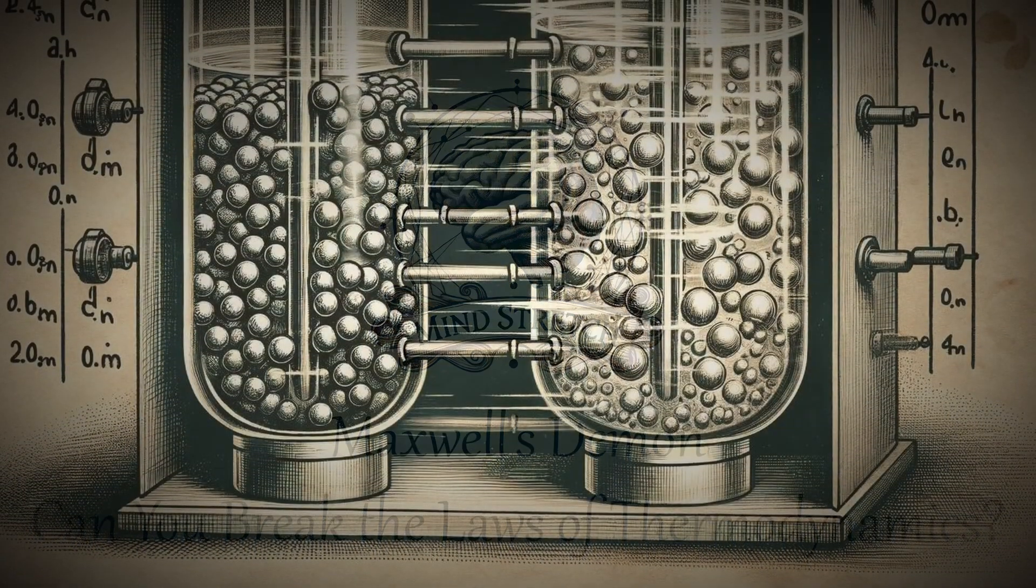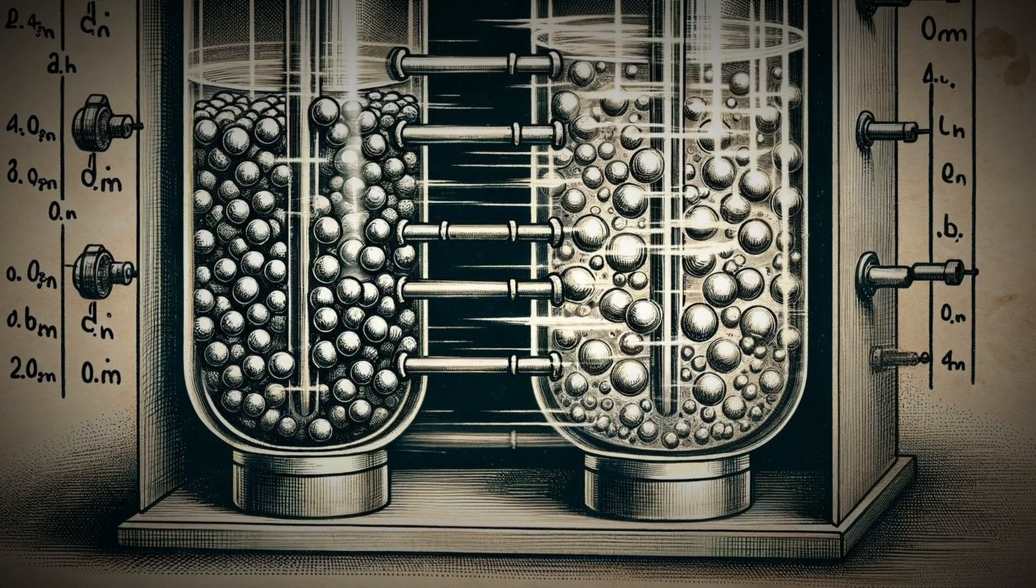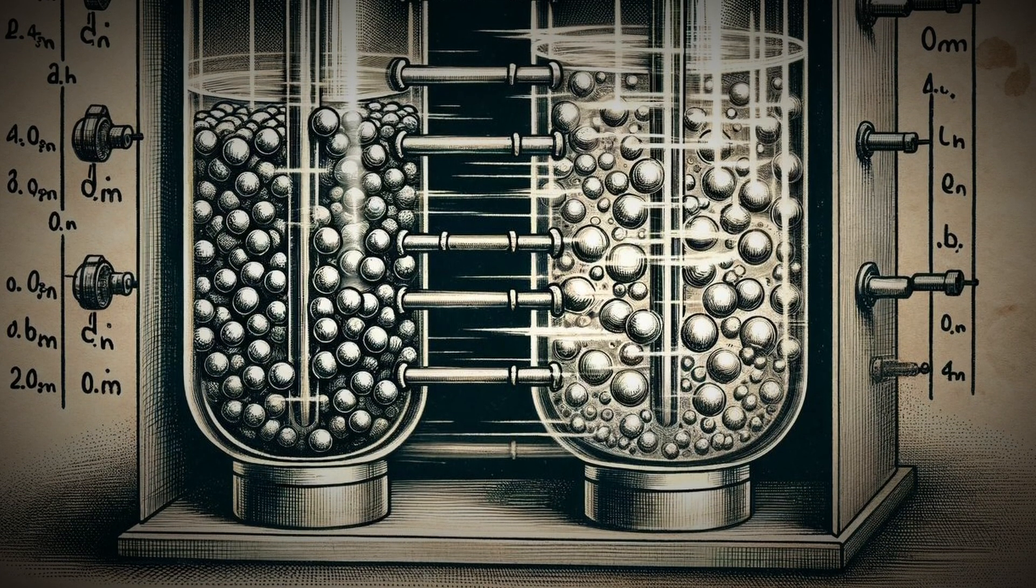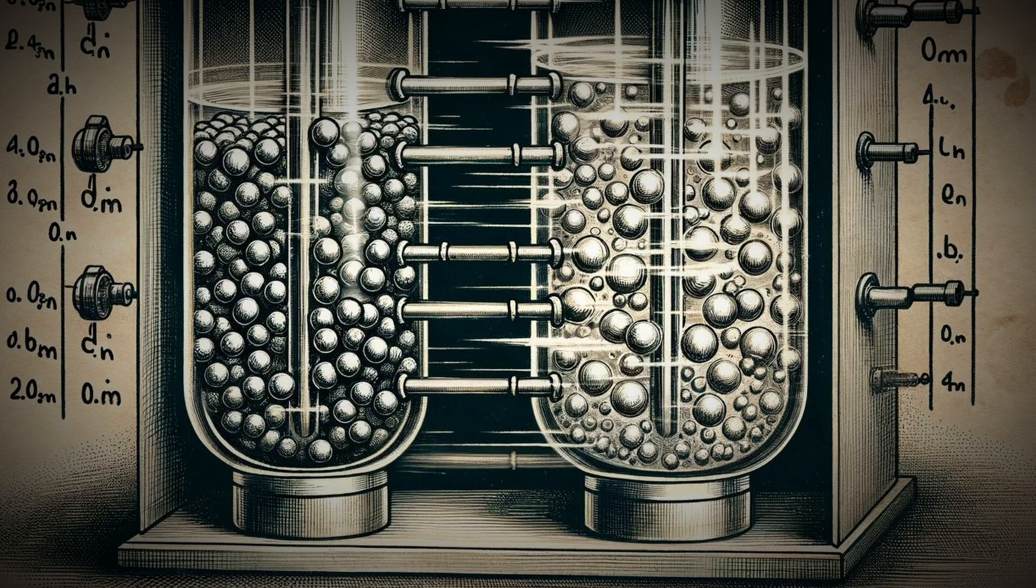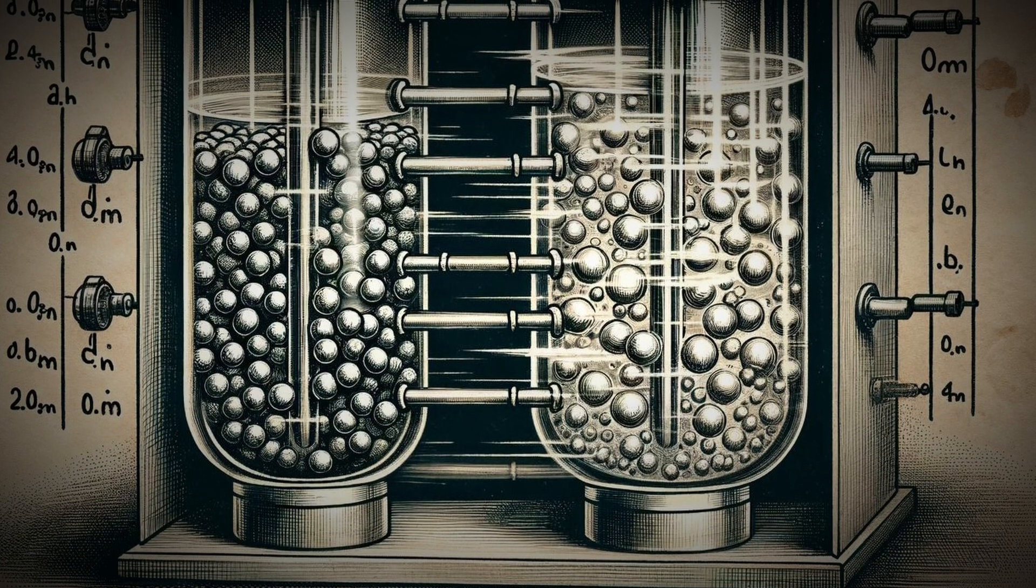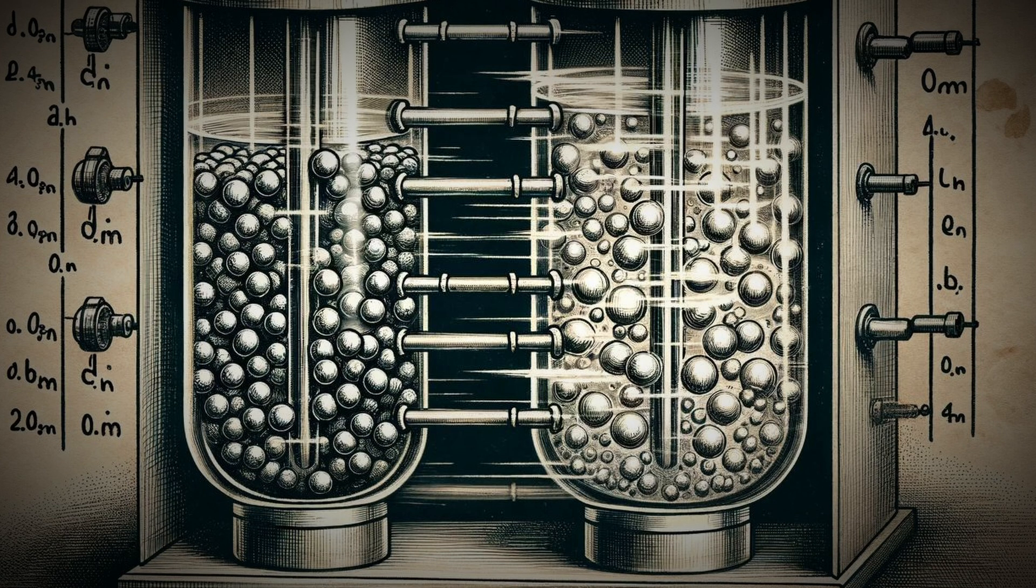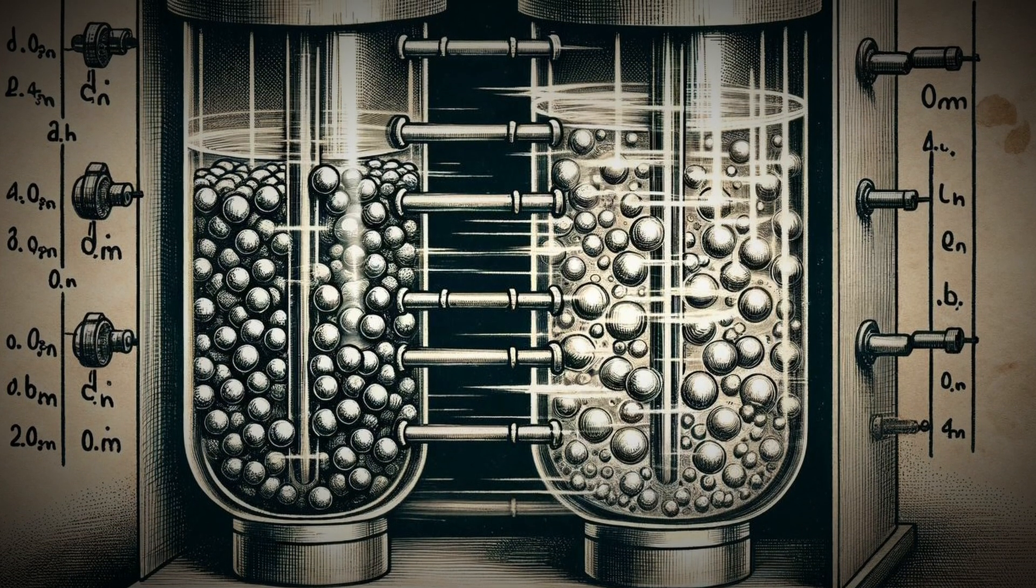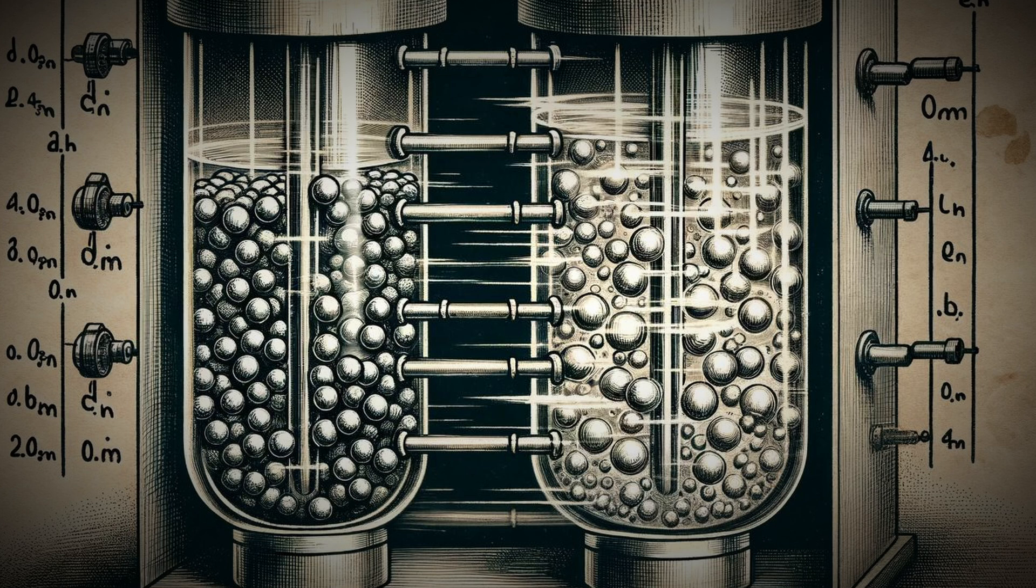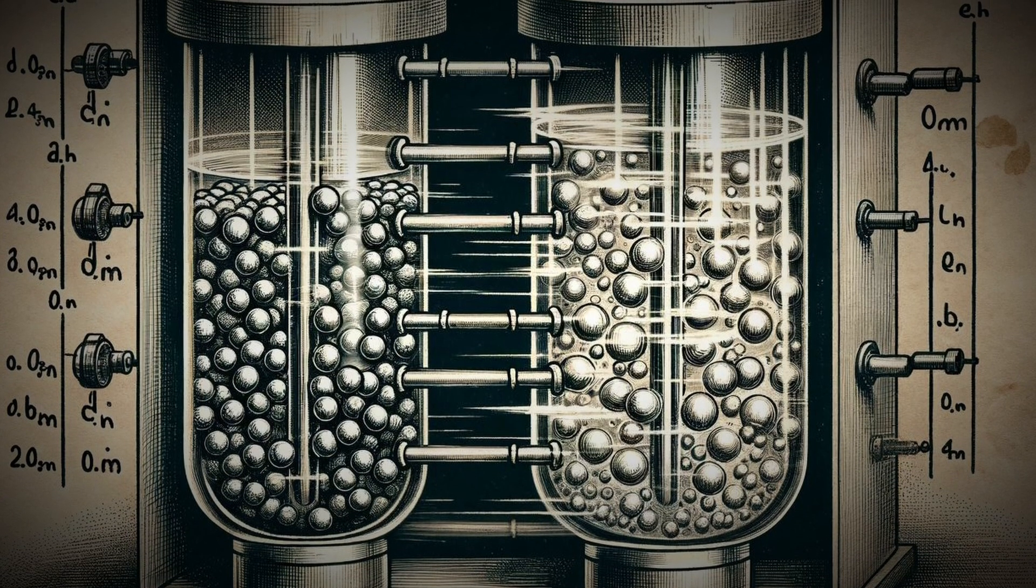To understand Maxwell's demon, let's start with a bit of context. In 1867, physicist James Clerk Maxwell proposed a thought experiment involving an imaginary creature, later called Maxwell's demon. This demon stands between two chambers of gas at the same temperature and sorts molecules without expending energy.